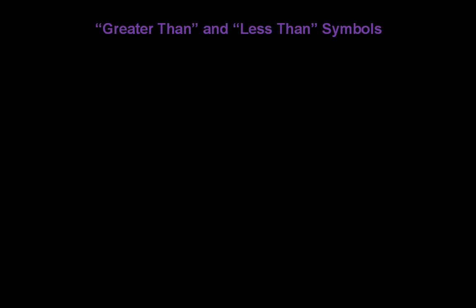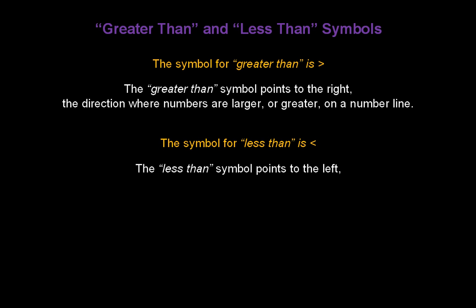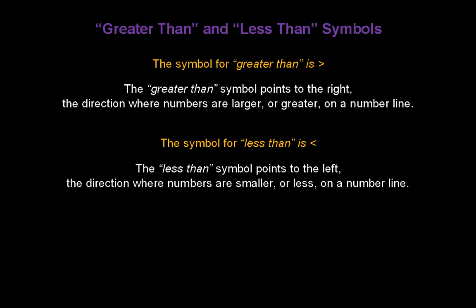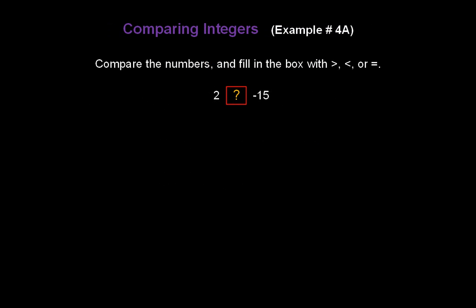Let's talk about greater than and less than symbols. The symbol for greater than points to the right — the direction where numbers are larger or greater on a number line. The symbol for less than points to the left — the direction where numbers are smaller or less on a number line. So, let's compare some numbers and fill in the box with greater than, less than, or equal to.